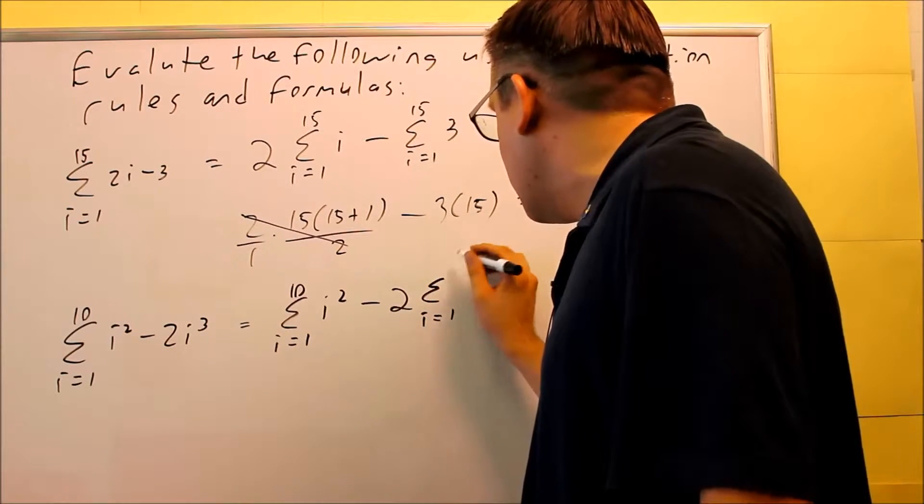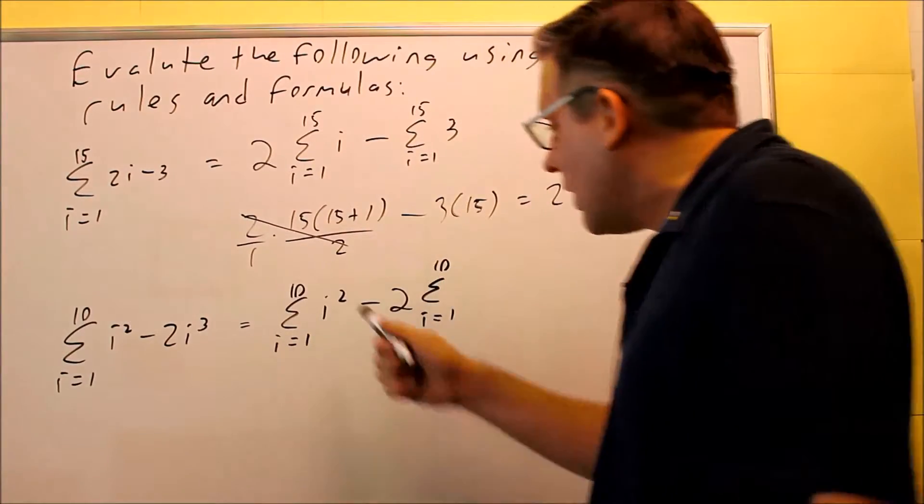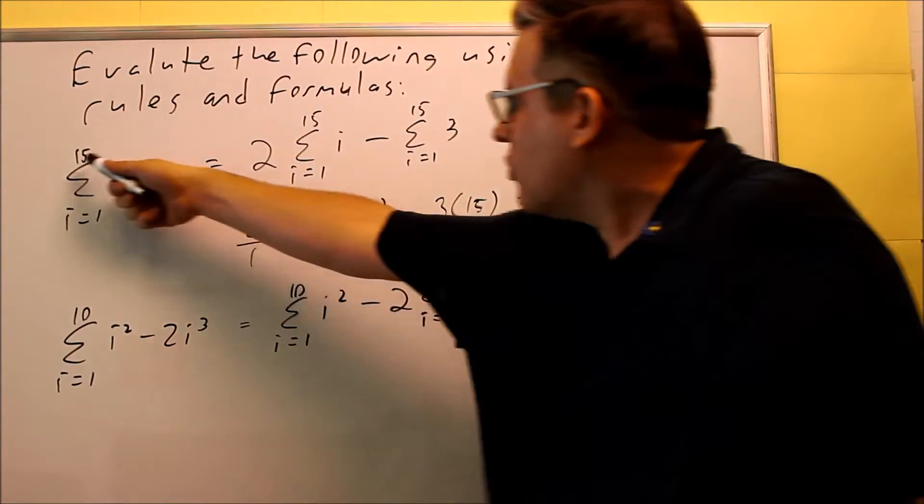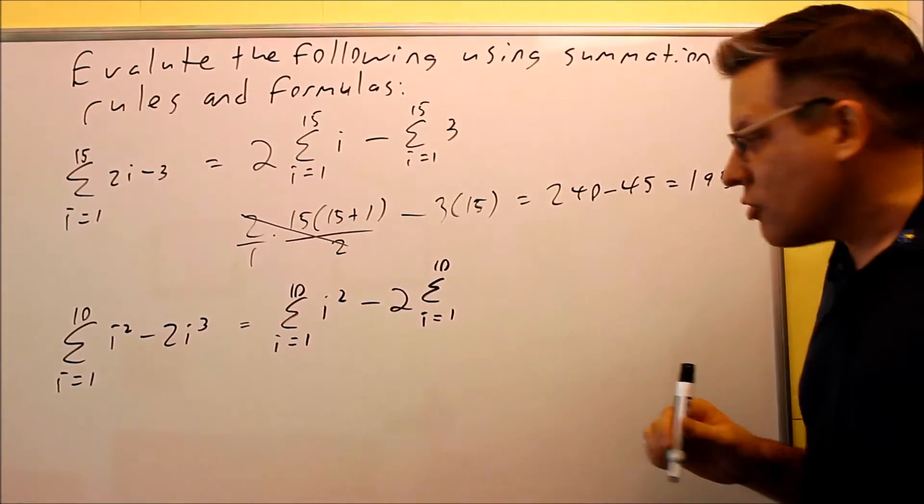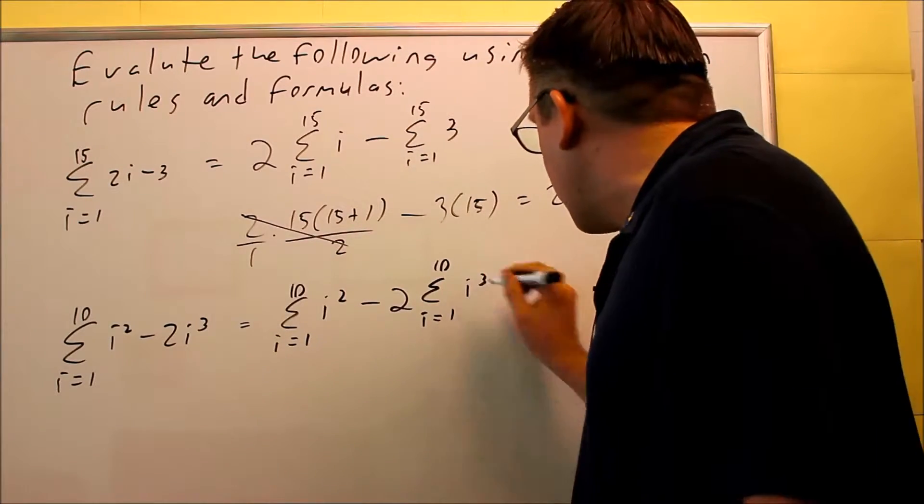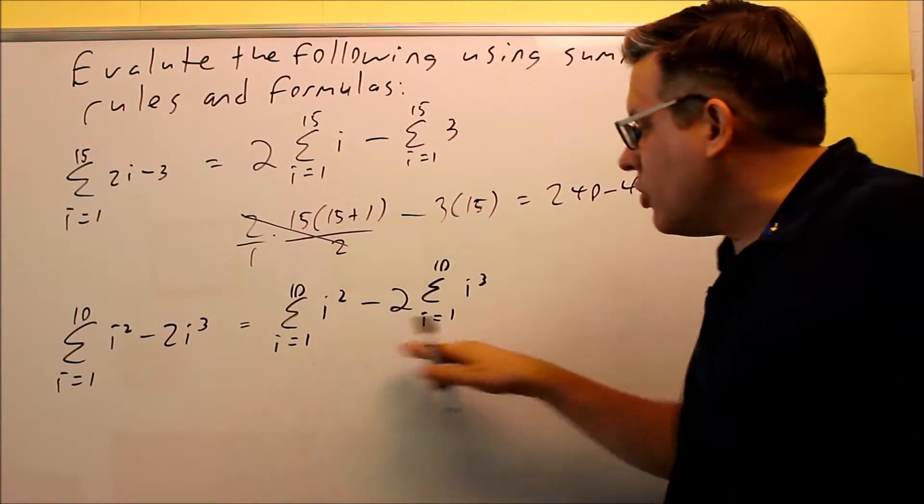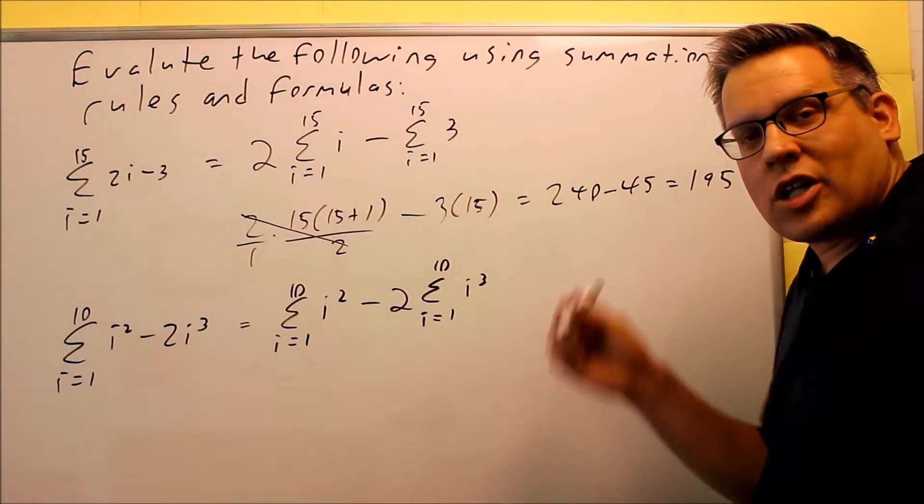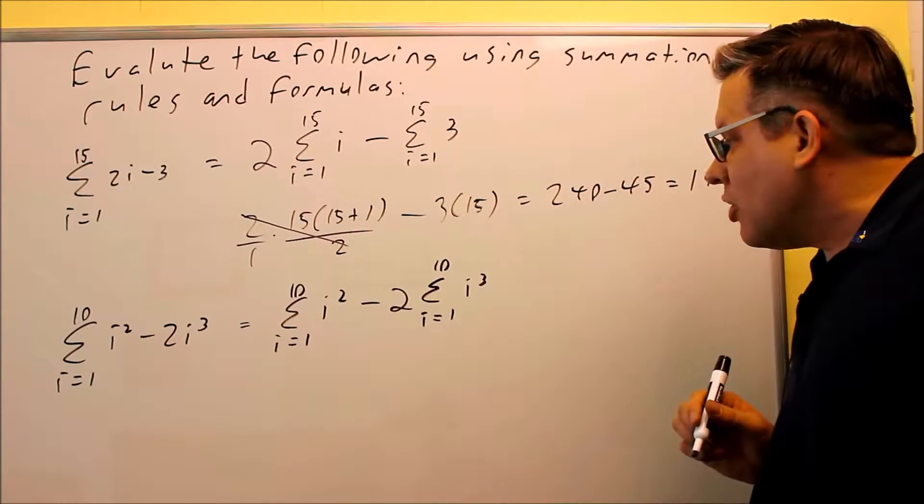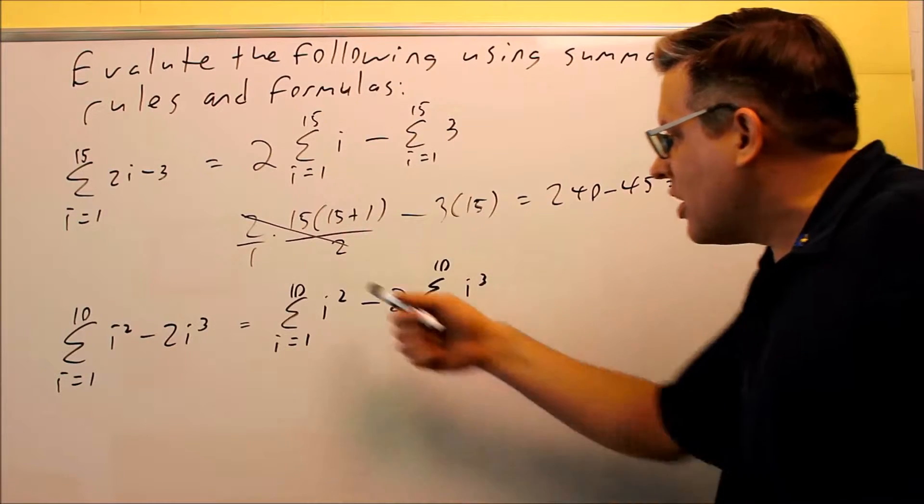i equals 1 to 10 also. If you're splitting it up, just remember you have to use always the same n on each of those when you do that. And then we're left with i cubed. So we have two different formulas, summation formulas we talked about in the previous video for i squared and i cubed, and we're going to put both those in.